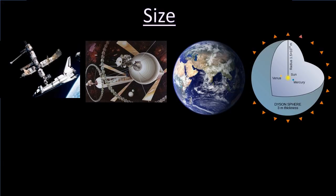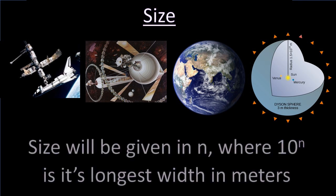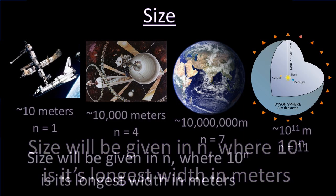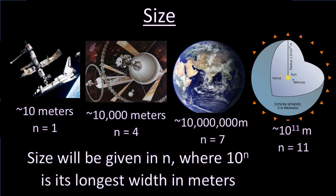Our next category that we'll be looking at for a classification system is size. These things again can range from the size of the space station all the way up to things as big as the solar system. So we have a set order of magnitude scale to look at this. We'll give a number, n, where n is 10 to the nth power in terms of its width in meters. So n equals 1 would be 10 meters, n equals 2 would be 100 meters, n equals 3 would be 1000 meters, n equals 6 would be a million meters, and so on.